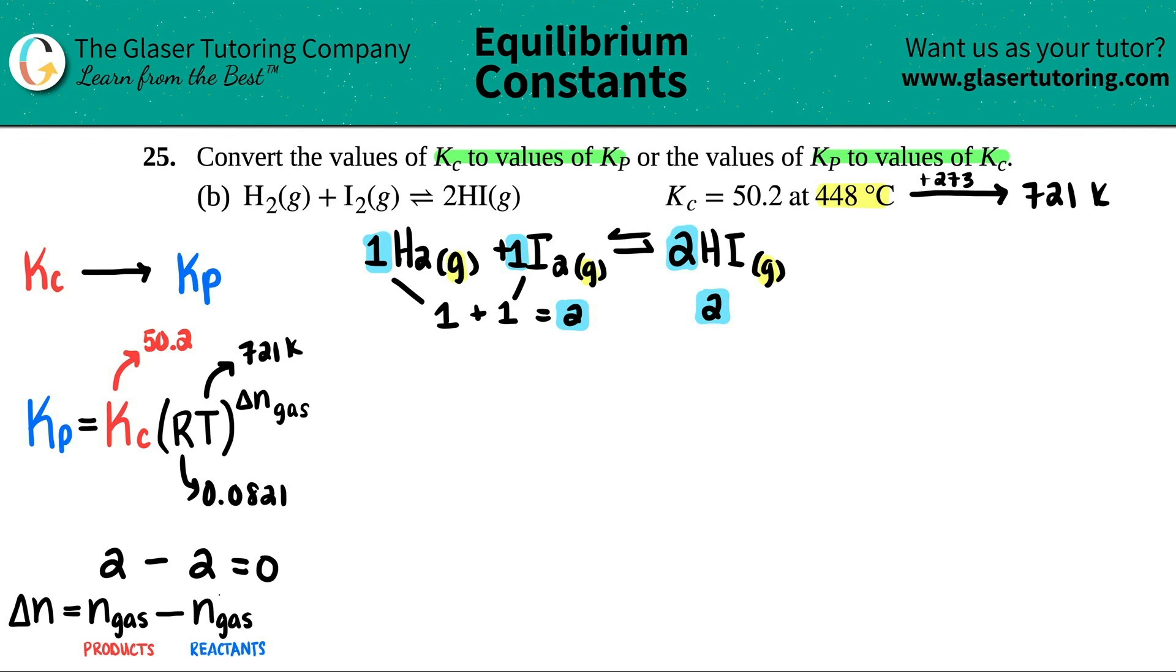So technically, this number is just going to be 0. Now, I have everything except for what I'm looking for, so now I can just plug it all in. KP equals the KC value, which was 50.2. Now we're going to multiply R times T, 0.0821 times the 721, and we're going to raise it to the delta N. We're going to raise it to the 0.